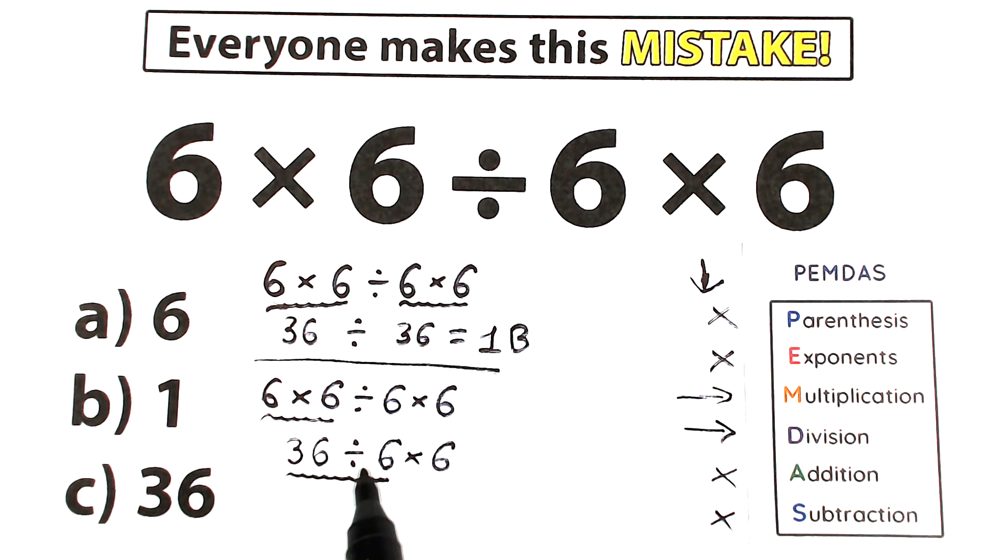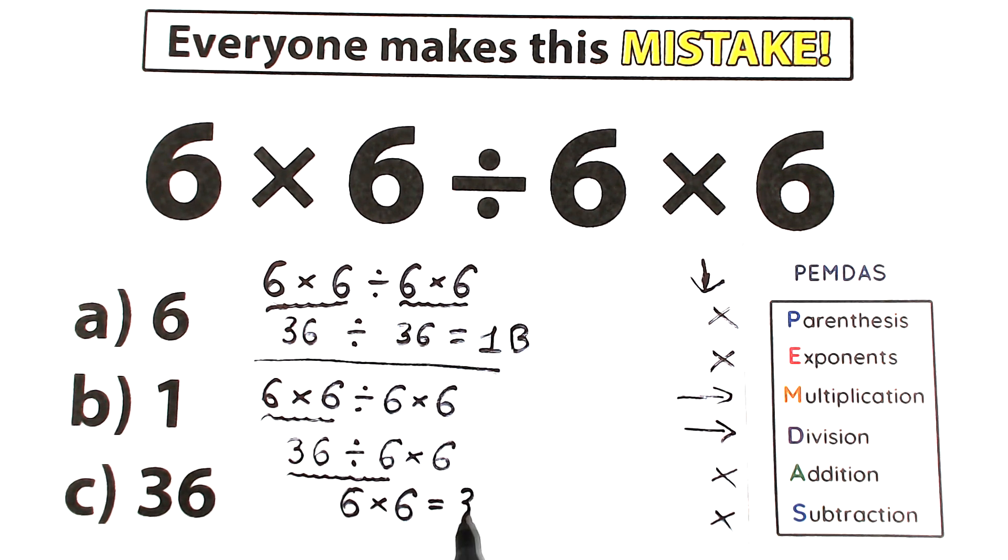But this division right here, so 36 divided by 6 equal to 6, and we still have multiplication by 6, which gives us 36.